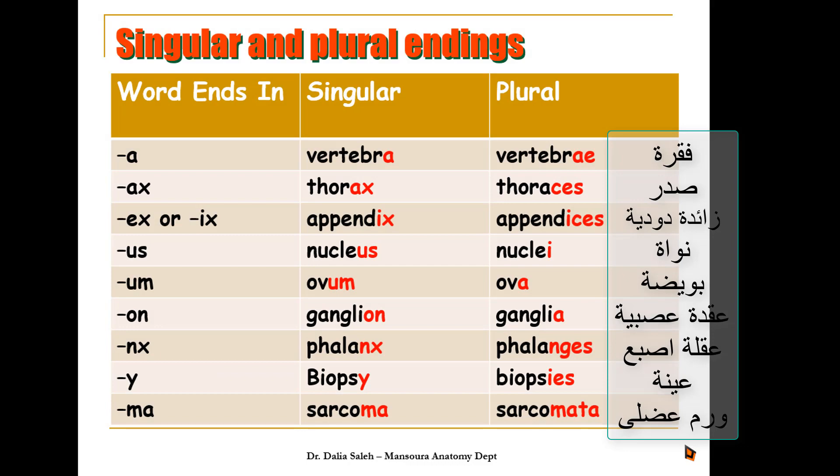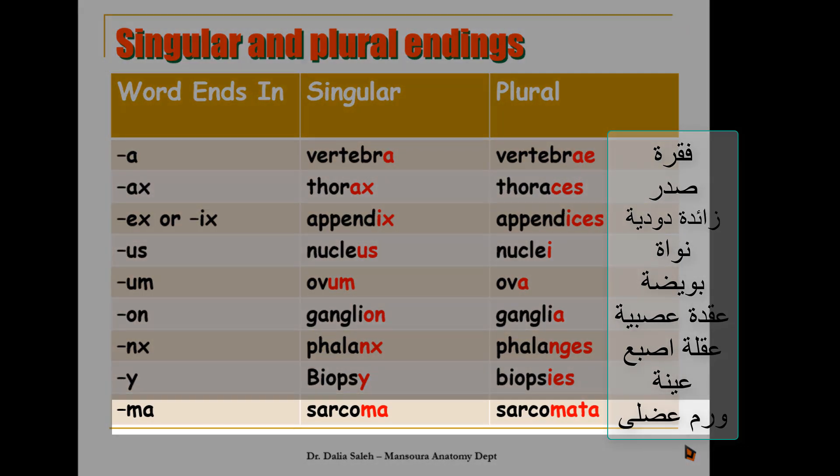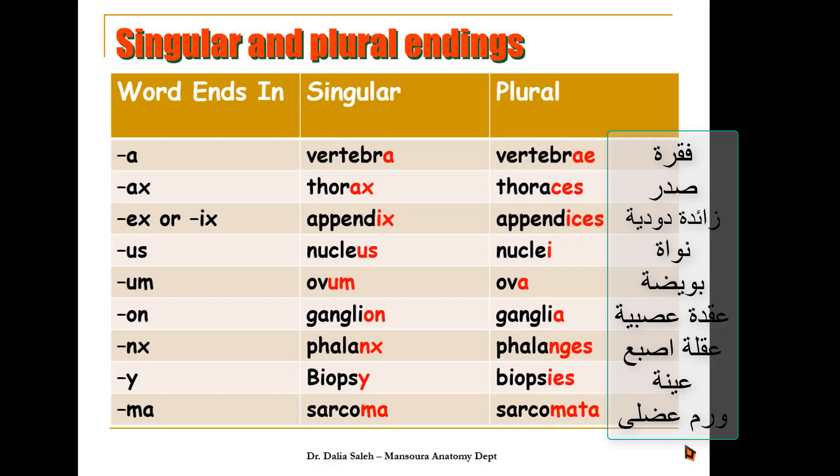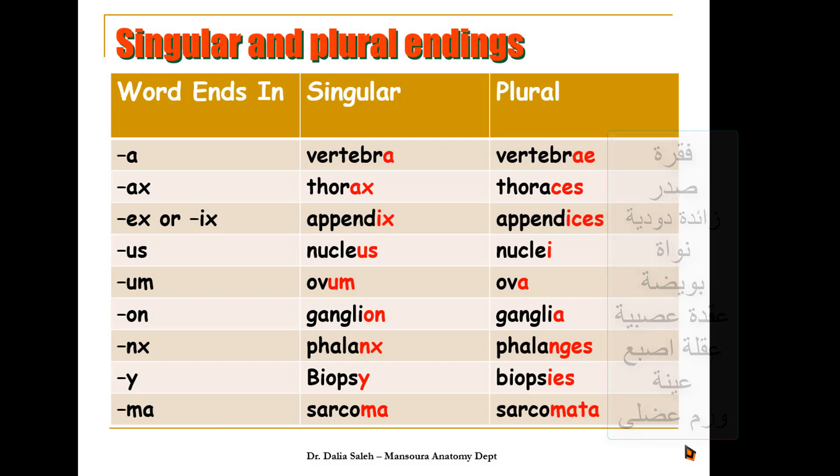Words that end in MA change into MATA. So sarcoma becomes sarcomata. So again, there are many examples of this and you need to memorize each word individually in its both singular and plural forms.